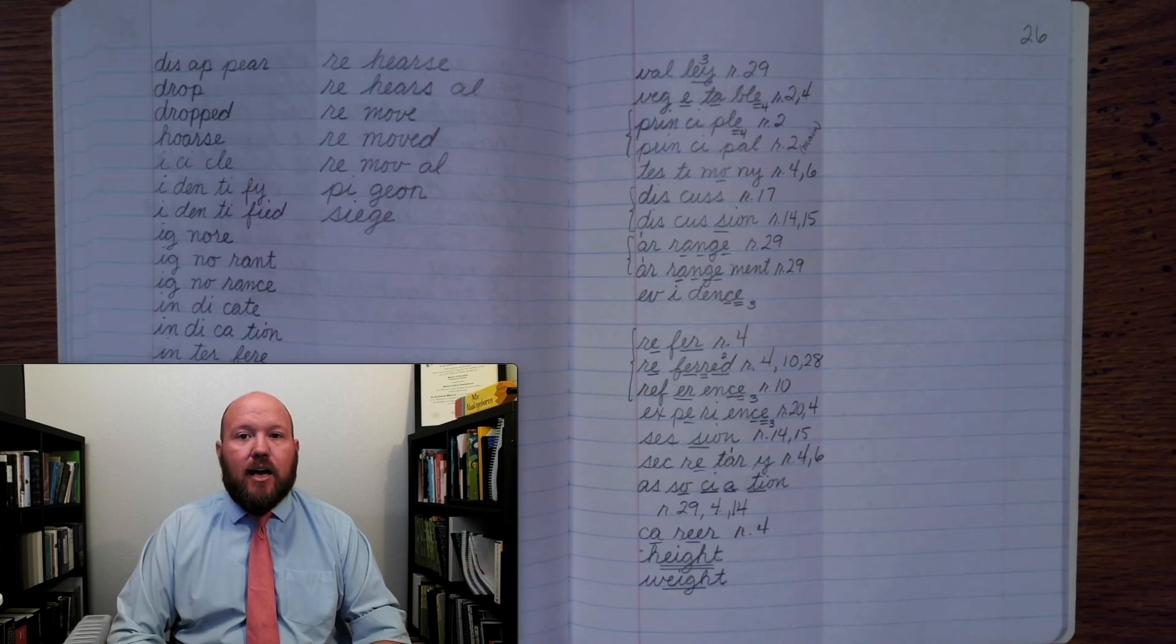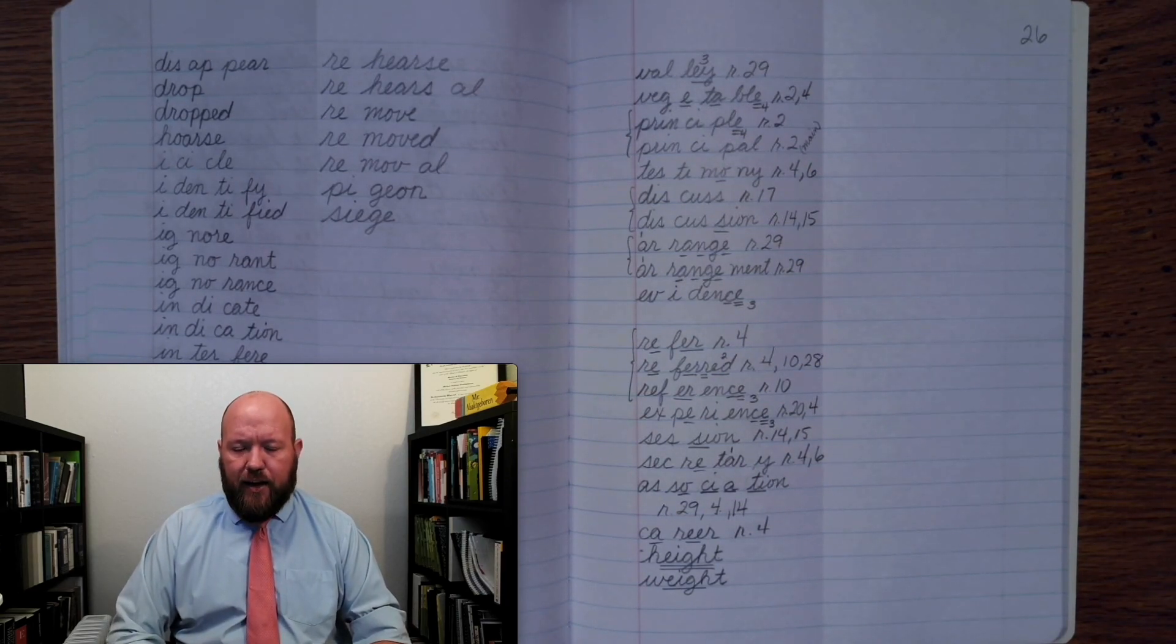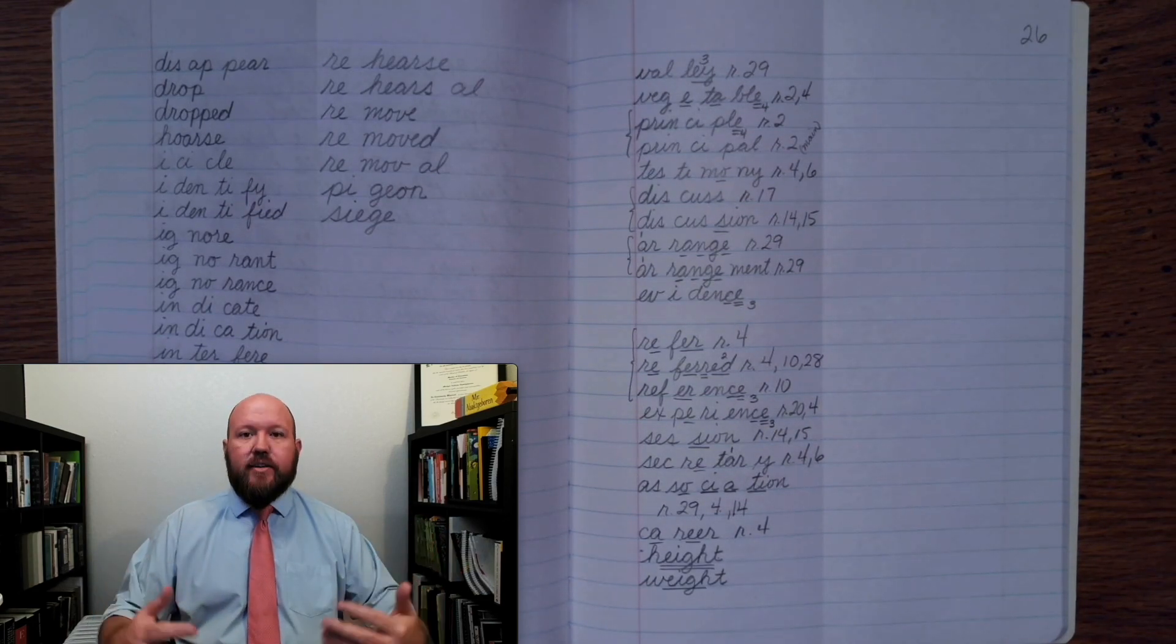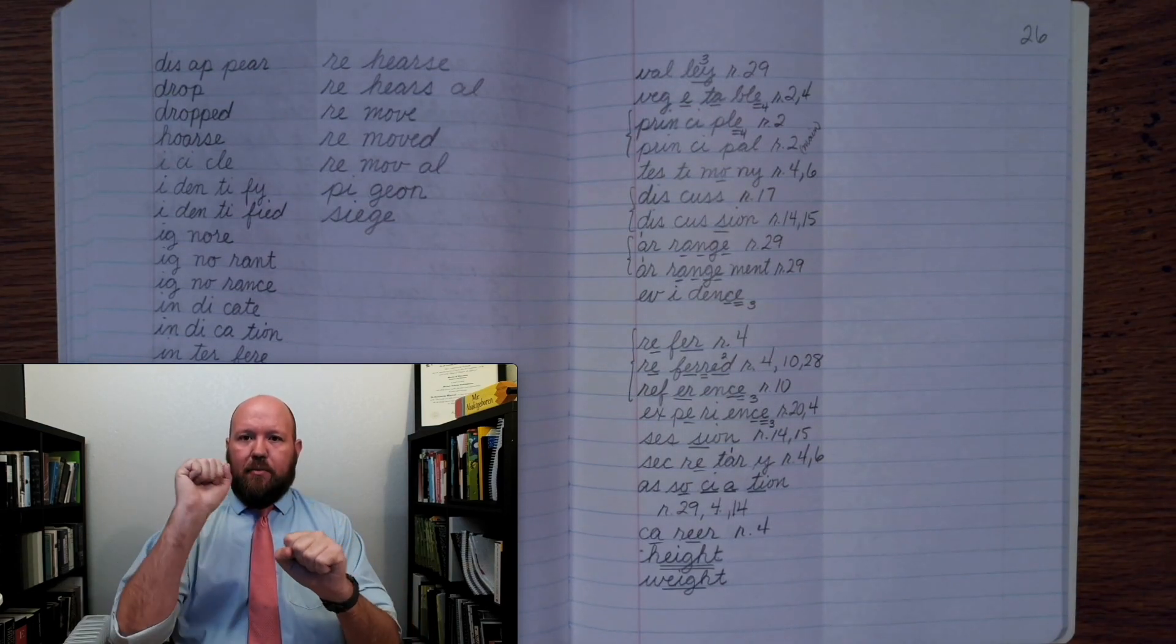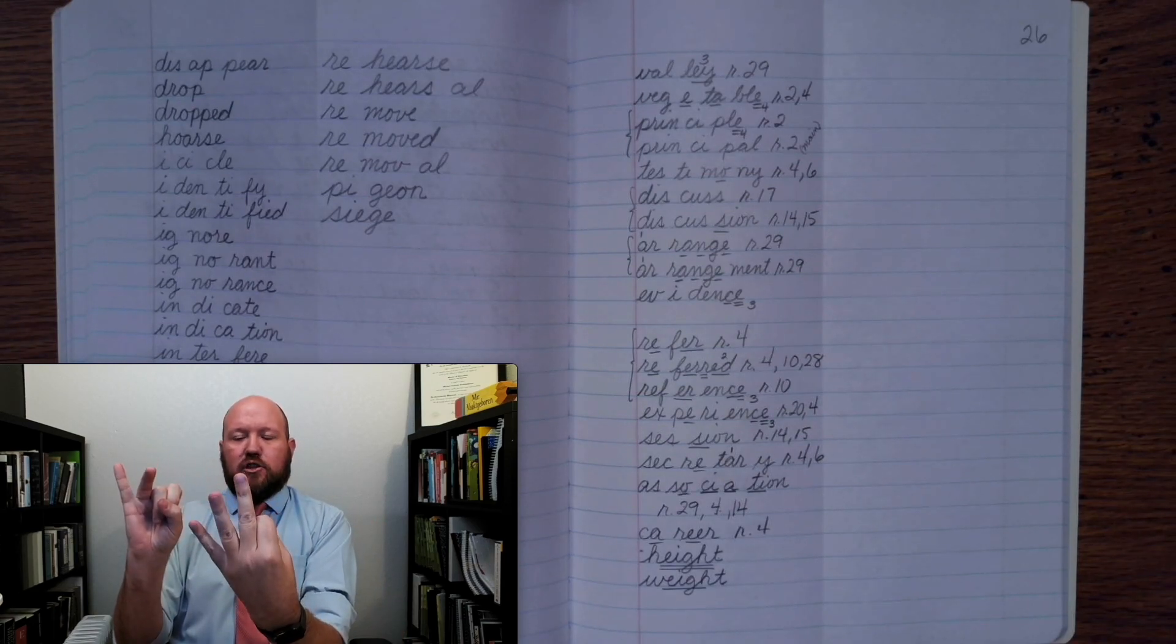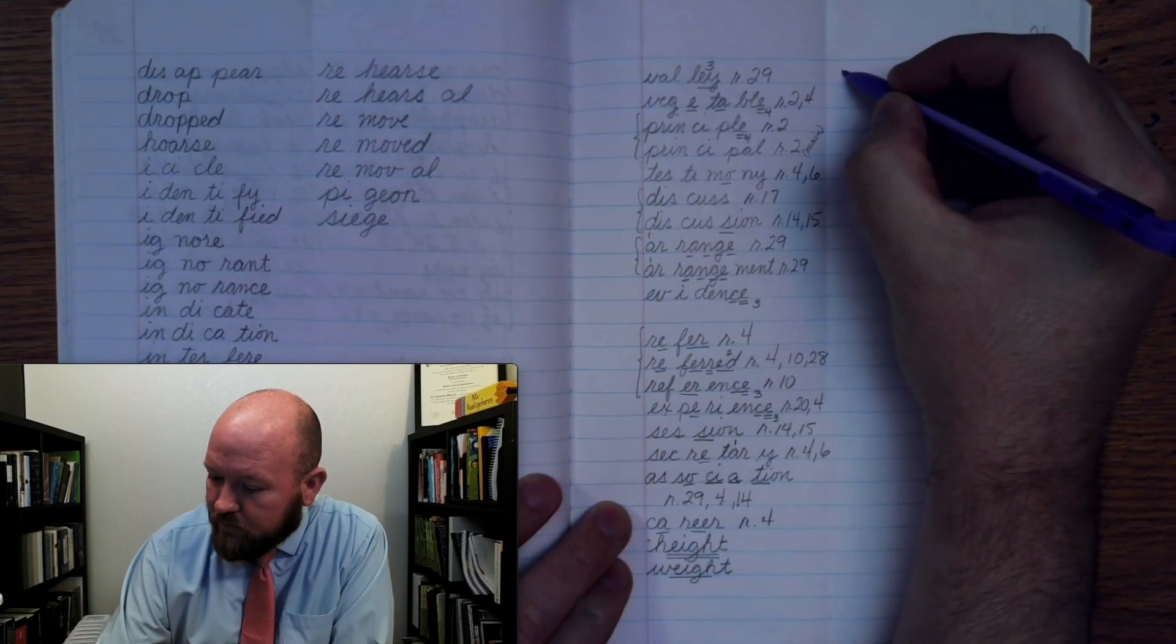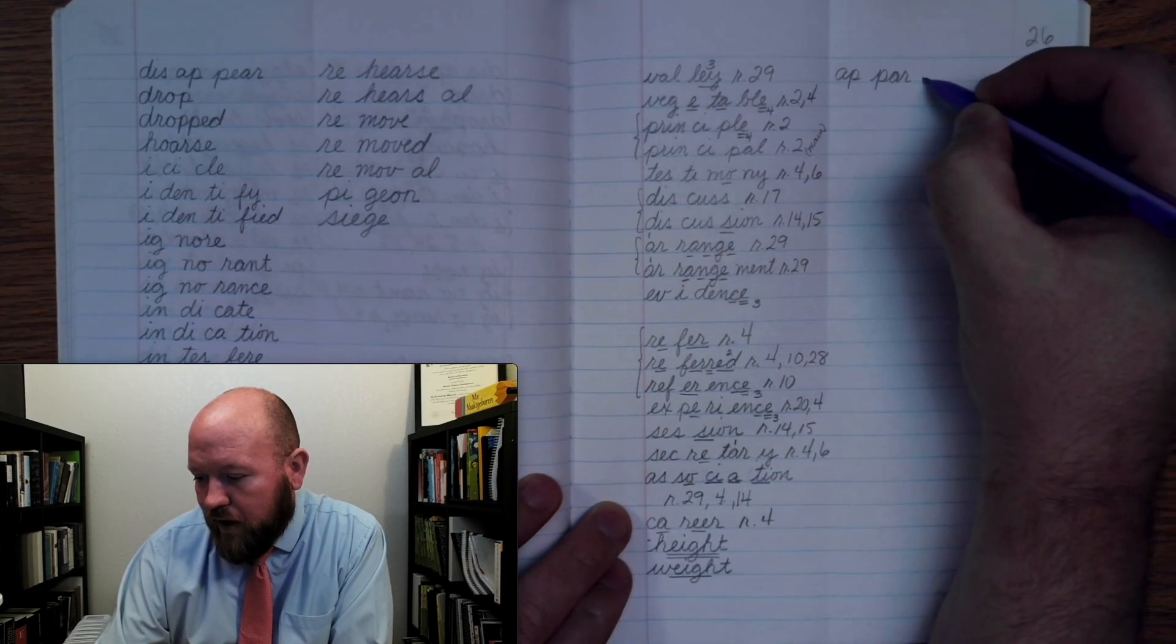The first word for today is apparent. So if something is obvious, if someone says that this happened because of this, you'd say, well, that's apparent, meaning obviously that's clear. Apparent, base word apparent. App-parent. App-parent. App-parent.